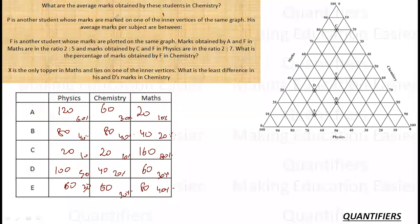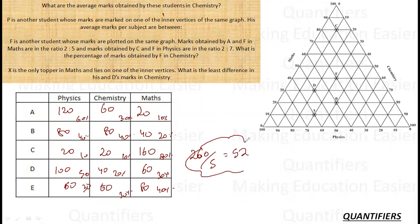So with this now I will start solving my questions. What is the first question? What are the average marks obtained by the students in Chemistry? So 60, 140, 160, 200, 260. 260 divided by 5. 52 is the answer.